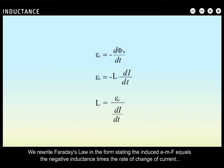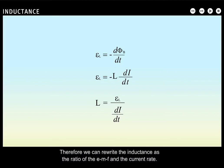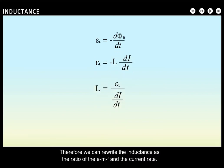We rewrite Faraday's Law in the form stating the induced EMF equals the negative inductance times the rate of change of current, which is equivalent to the inductance equals the negative induced EMF divided by the rate of change of current. Therefore, we can rewrite the inductance as the ratio of the EMF and the current rate. The SI unit for inductance is the Henry, represented by capital H, which equals one volt-second per ampere.